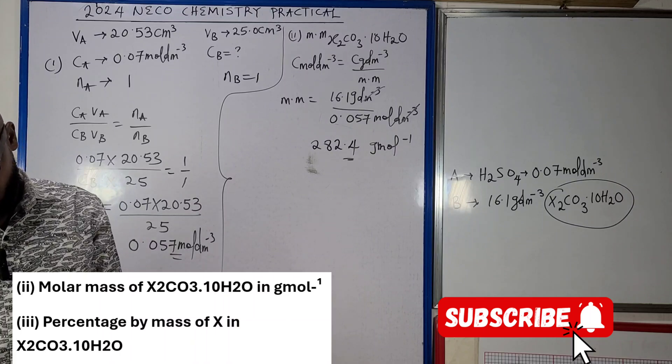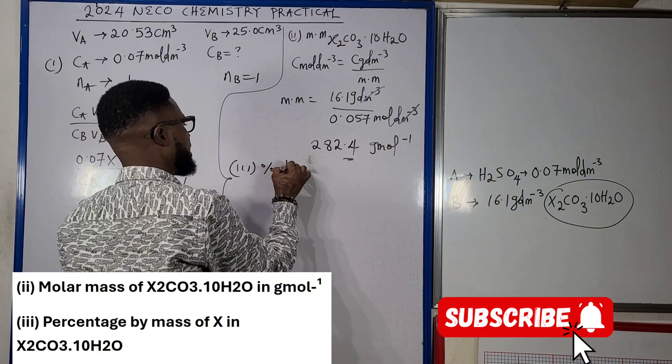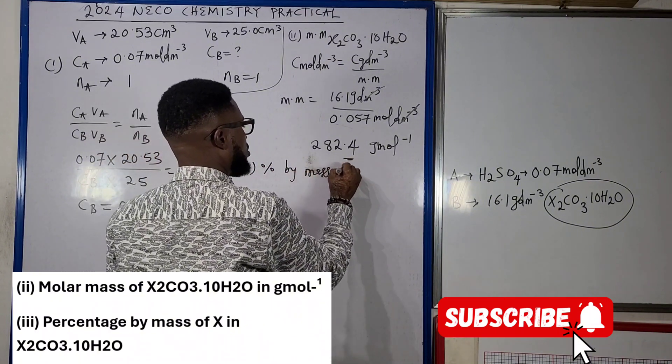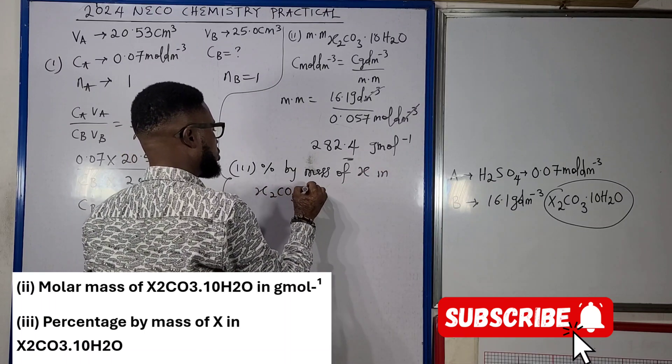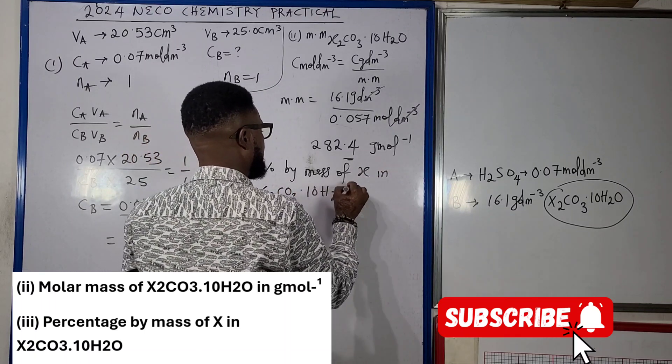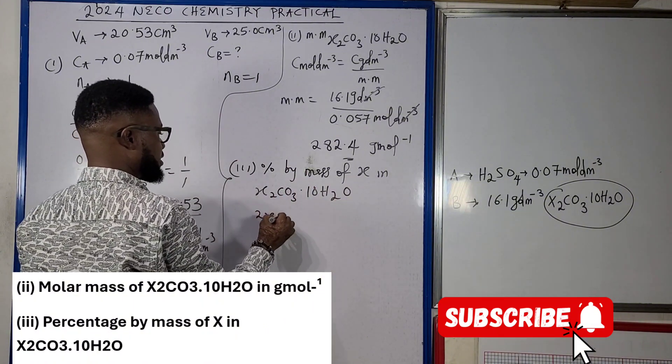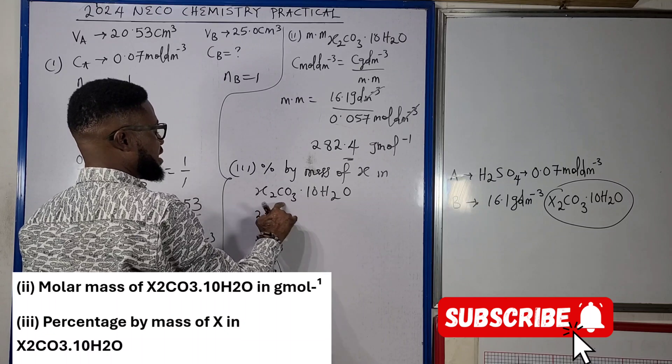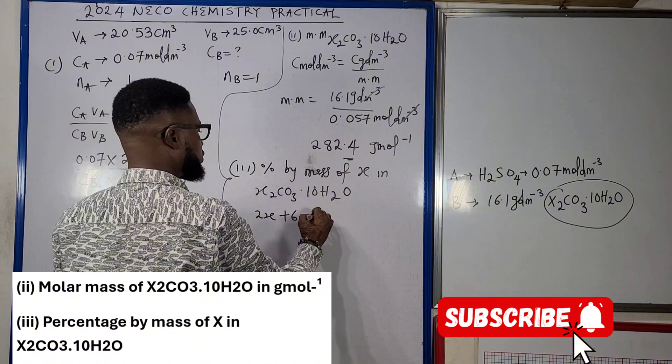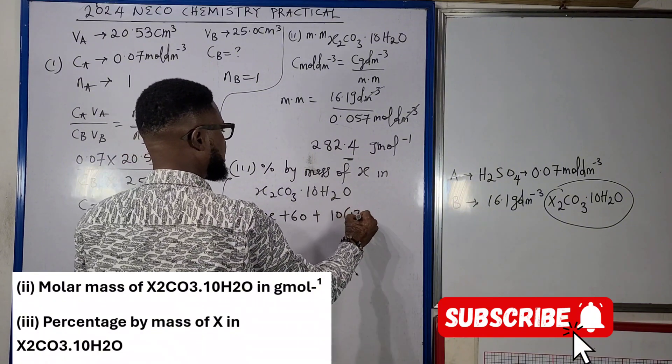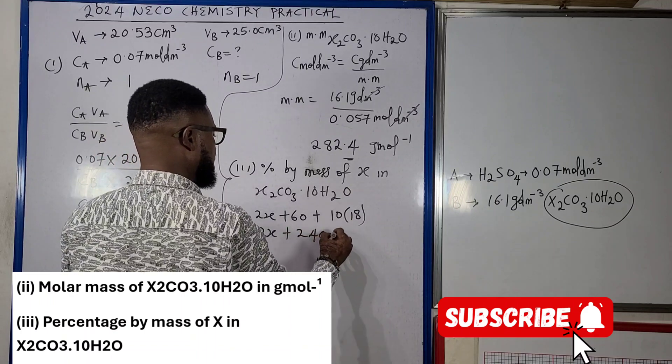Now for question three, we're told to look for the percentage by mass of X. Question three: percentage by mass of X in X2CO3.10H2O. What this means is very simple. If you look at B3 here...